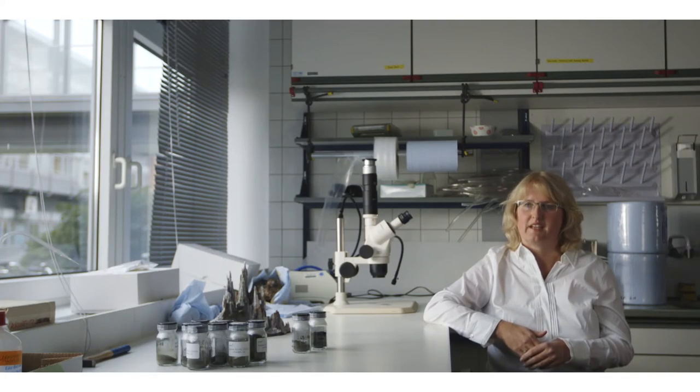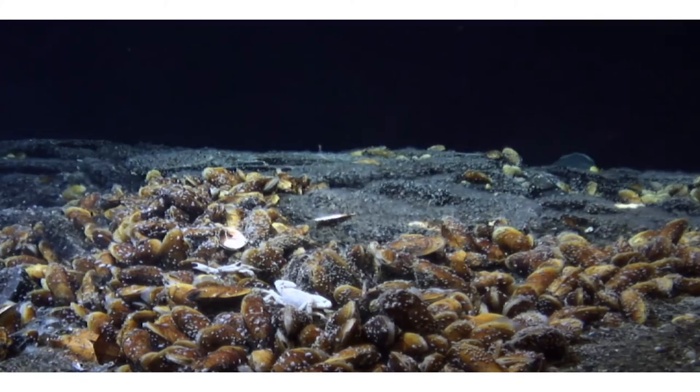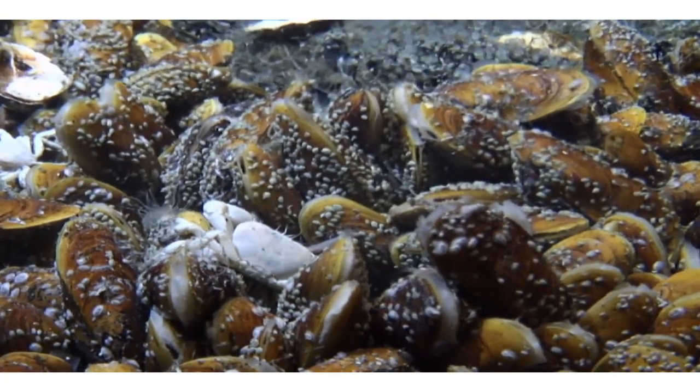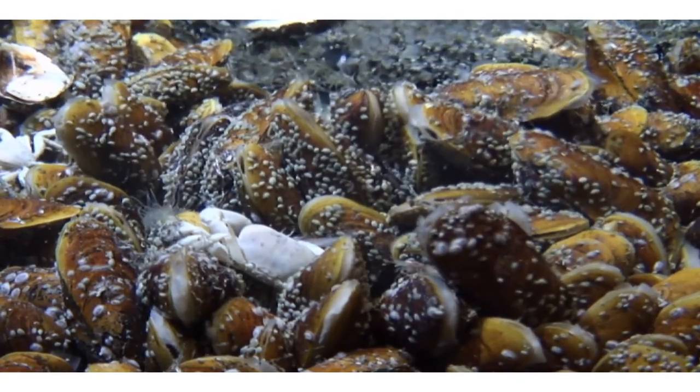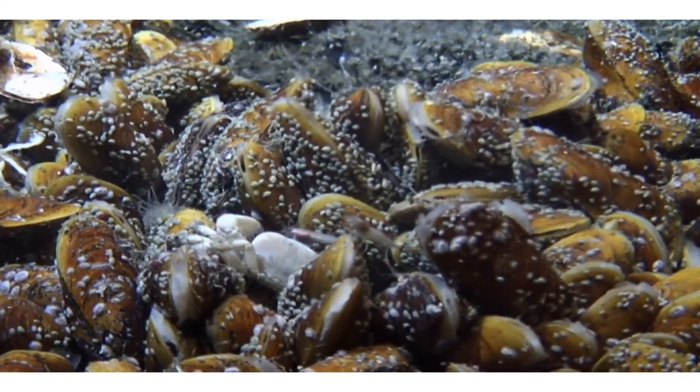But there is more. Gigantic clams and mussels containing chemosynthetic bacteria intracellularly within their gills. These clams line up along the vent fissures, thus providing a constant flow of nutrients to their bacterial helpers.